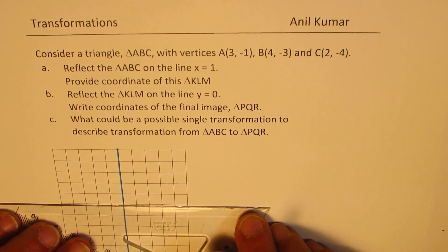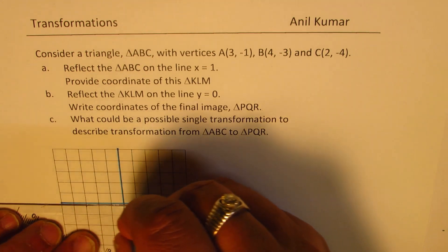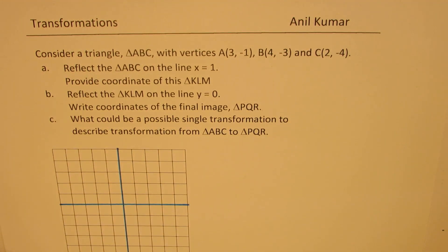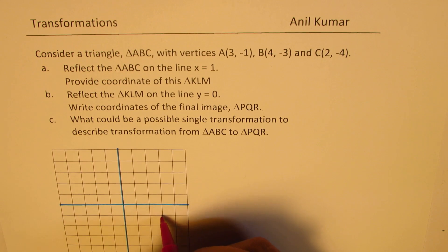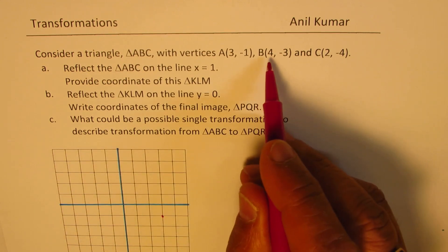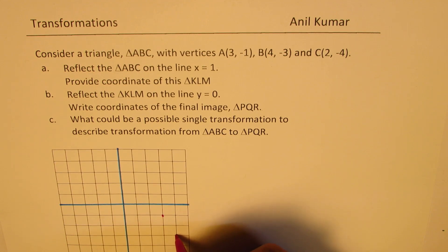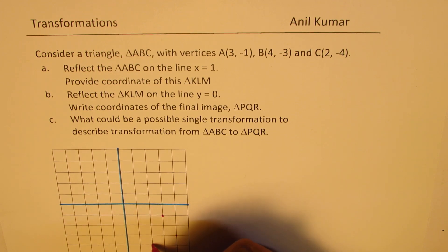So let us say this is our graph. On the coordinate plane, we have the x and y-axis. Let us now sketch triangle ABC. A is (3,-1), B is (4,-3), and C is (2,-4). So the triangle for us looks like this.